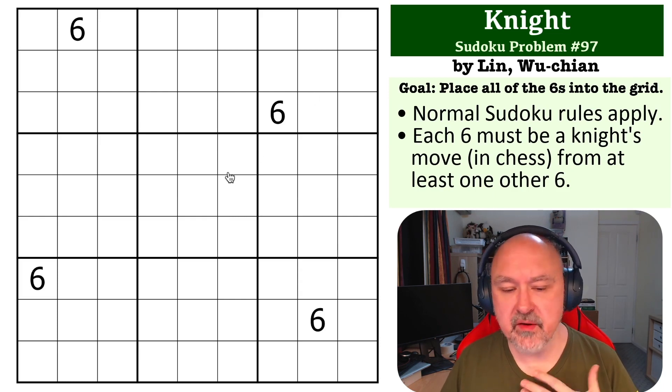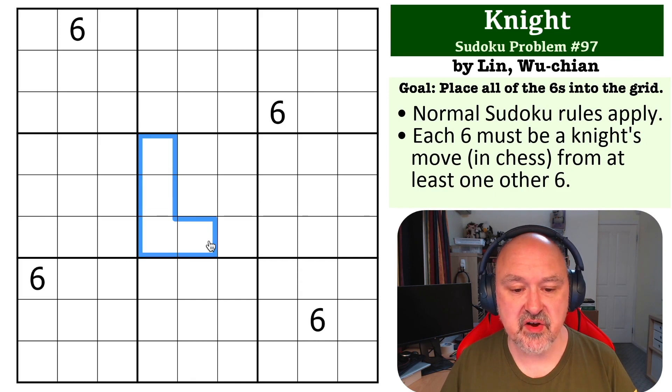Okay, so we should all be familiar, I hope, with knight's move. I possibly should have explained it. So the knight's move is the L pentomino shape, and each six must see another six by that shape.